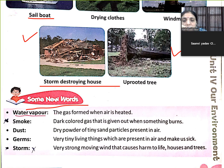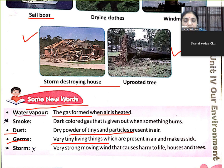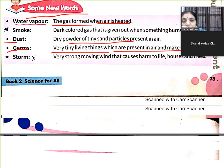Now, some new words. Water vapour: the gas formed when water is heated. Dust: dry powder of tiny sand particles present in air. Germs: very tiny living things which are present in air and make us sick.